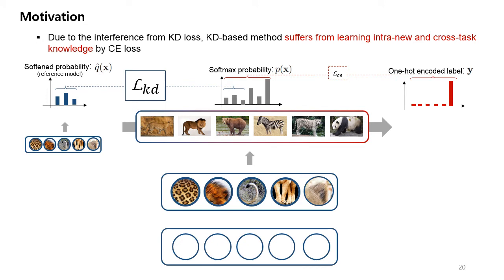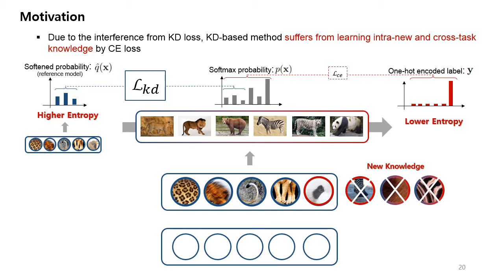Our research motivation is that due to the interference from distillation loss, KD-based methods suffer from learning intra-new and cross-task knowledge. This is intuitively because the distillation loss is not intended to newly learn additional information, but for the pre-trained network not to be changed that much. And a soft label used by the distillation loss carries a large amount of information, than one-hot-encoded class label in the cross-entropy loss. And therefore, distillation loss will more strongly affect the final loss function than cross-entropy loss. Because of this fact, distillation loss of the standard KD method will make the network more difficult to learn the intra-new and cross-task knowledge, because both of them can be acquired by cross-entropy loss like we have seen in the previous slide.